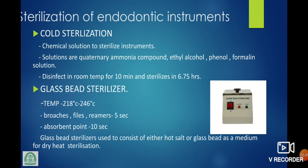Sterilization of endodontic instruments — cold sterilization: chemical solution to sterilize instruments; solutions include quaternary ammonium compound, ethyl alcohol, phenyl formalin solution — disinfection at room temperature for 10 minutes, sterilization in 6.75 hours. Glass bead sterilization: temperature 228 to 246 degrees Celsius — broaches, files, reamers for 5 seconds; absorbent points for 10 seconds.